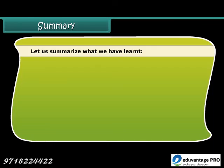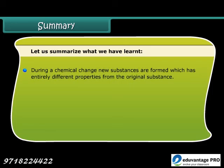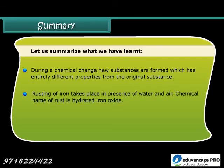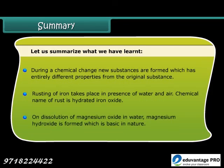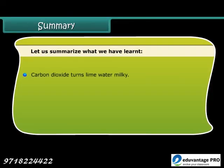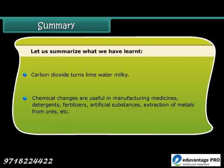During a chemical change, new substances are formed which have entirely different properties from the original substance. Rusting of iron takes place in the presence of water and air. The chemical name of rust is hydrated iron oxide. On dissolution of magnesium oxide in water, magnesium hydroxide is formed, which is basic in nature. Carbon dioxide turns lime water milky. Chemical changes are useful in manufacturing medicines, detergents, fertilizers, and artificial substances, and in the extraction of metals from ores.